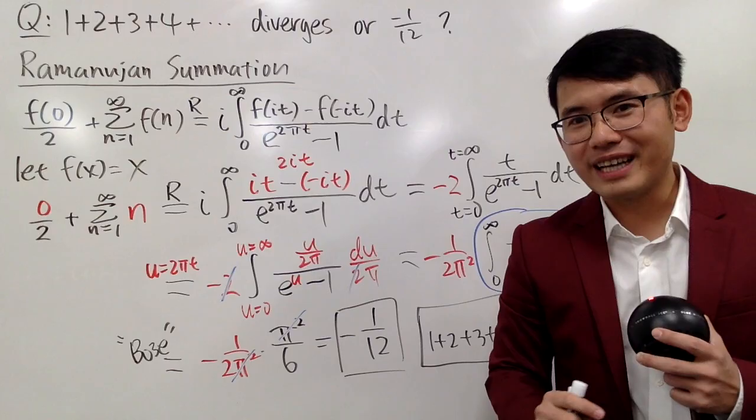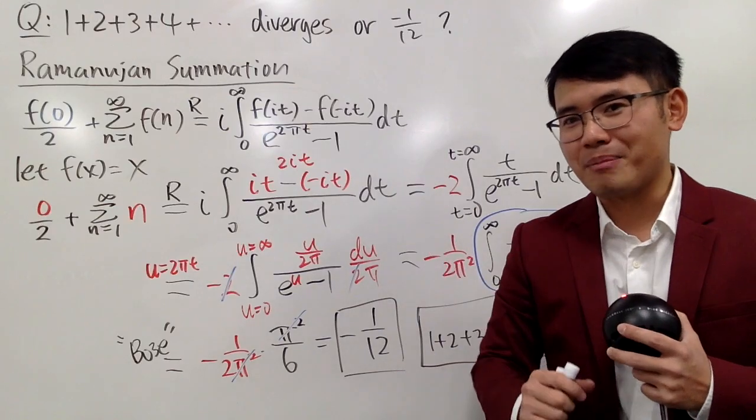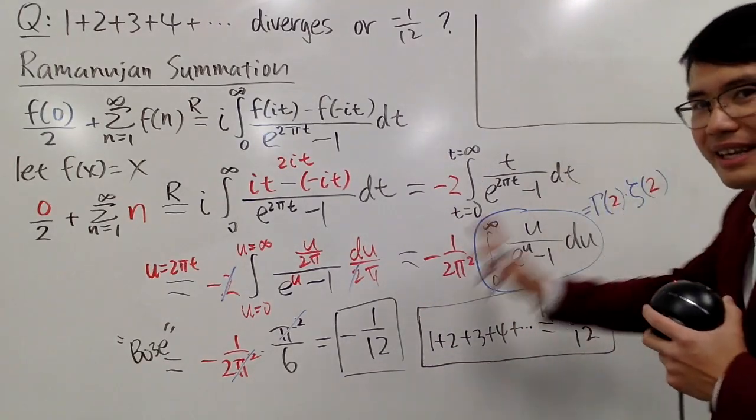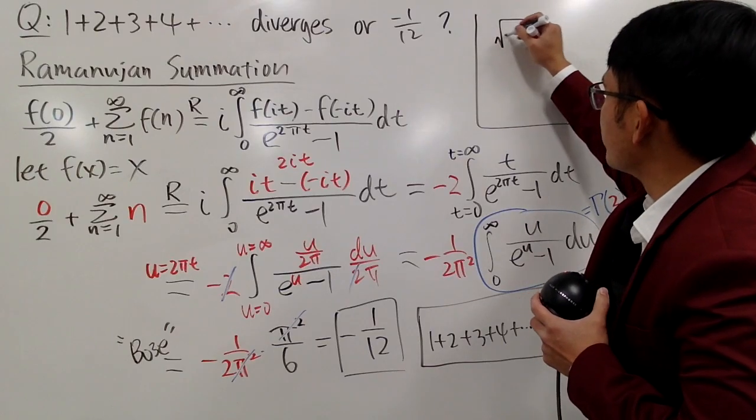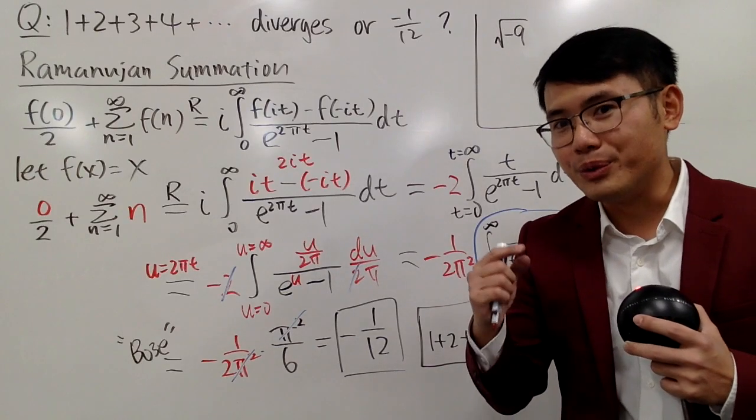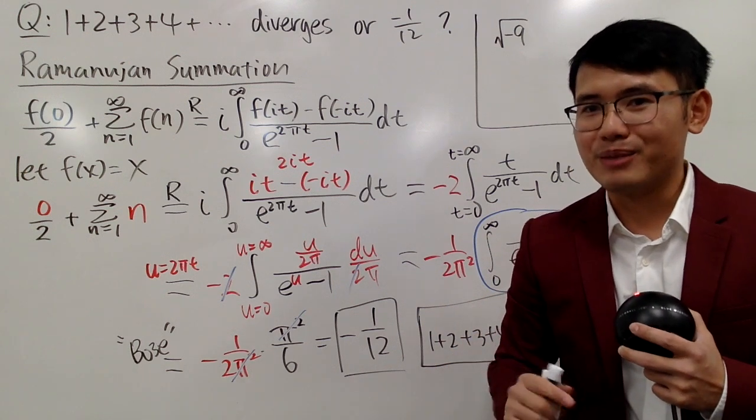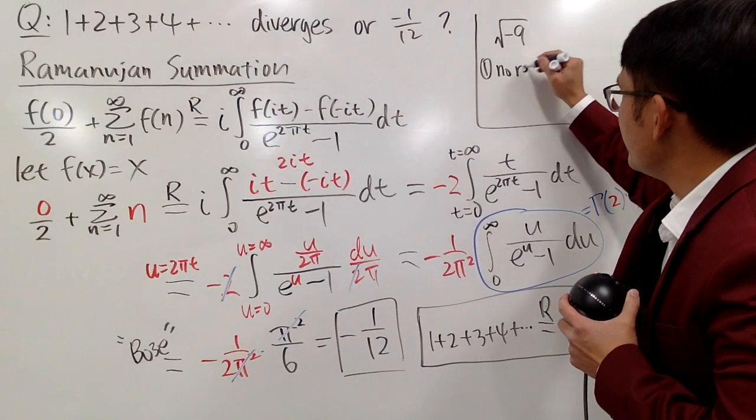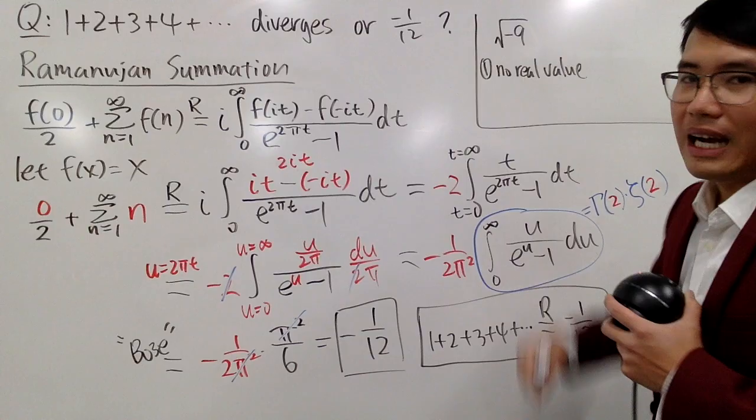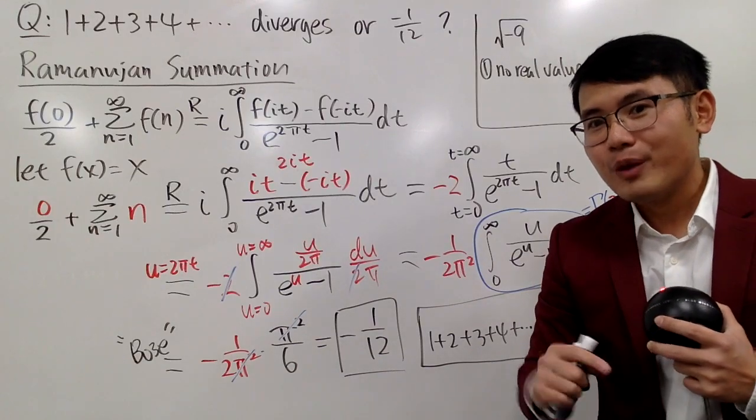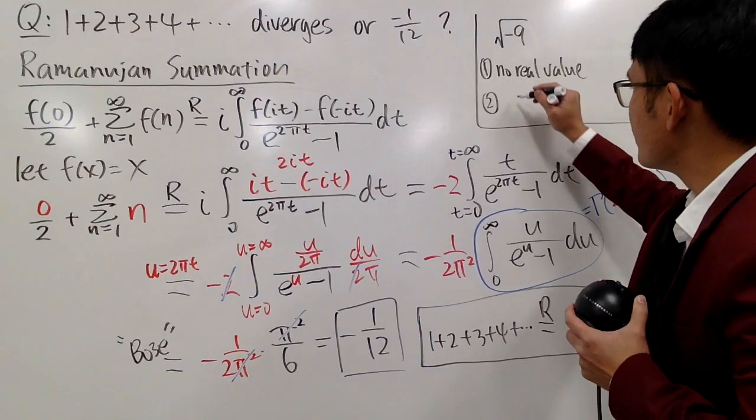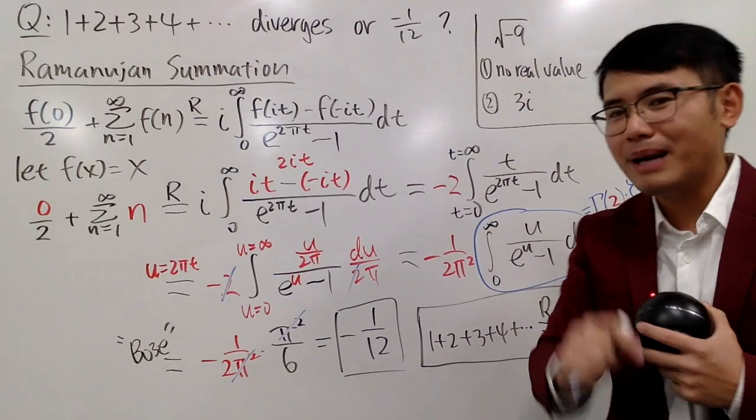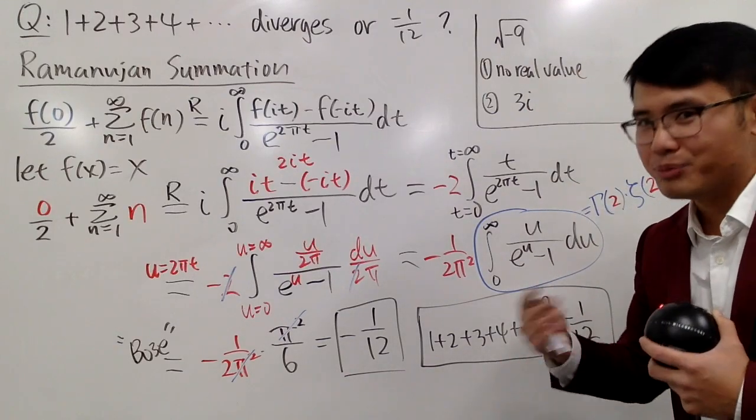And one last thing, this is not the first time that we have seen that we assign some value to something that may not make sense in the first place. In fact, I'll give you two more examples that you will be able to relate to this. The first example is that, imagine if you have to calculate square root of negative 9. What do you do if you haven't seen imaginary numbers or complex numbers? How would you answer the question? Well, in this case, you would just answer that this has no real value because, as we all know, we cannot have negatives under the square root.